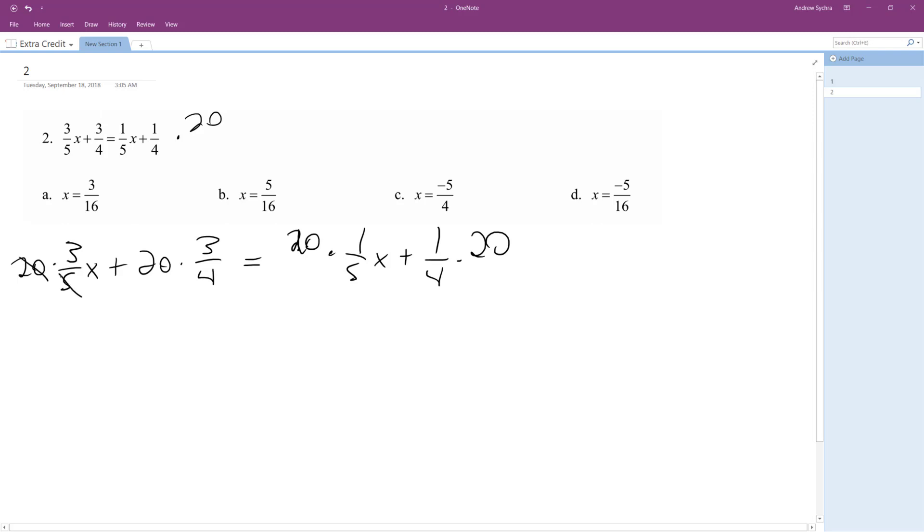Alright, so this 20 cancels out the 5, becomes a 4. This becomes a 5. This becomes a 4. This becomes a 5.